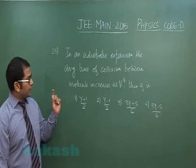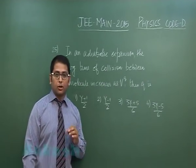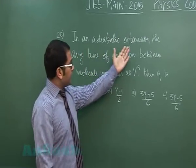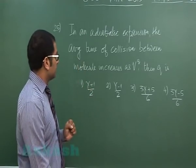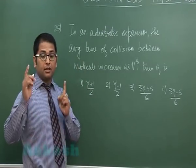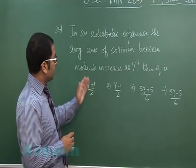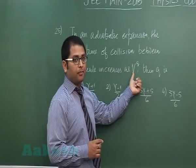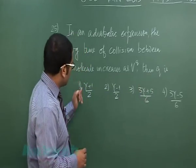Question number 25, again from thermodynamics. Quite a lot of repetition you must have noticed. In an adiabatic expansion, the average time of collision between molecules, that means the relaxation time, increases as V raised to the power q. V is the volume, and we need to find the value of q in terms of gamma.